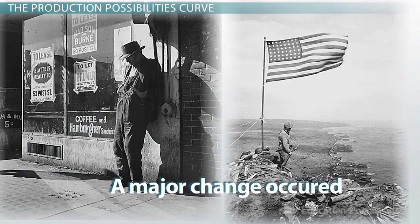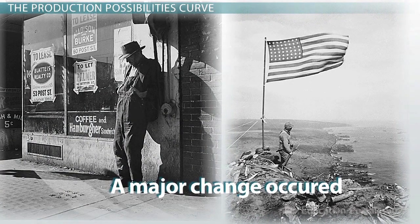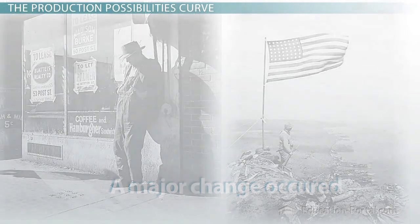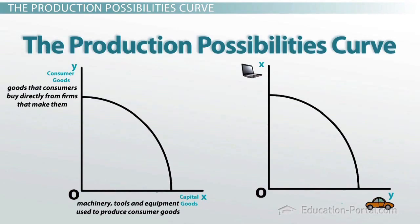Even though we were producing a lot more, we still had a limit — a capacity that we couldn't exceed unless something major changed. That's why any point outside the curve is not possible. The production possibilities curve, whether it's showing two specific goods such as cars and computers, or two types of goods such as capital goods and consumer goods, shows us how much is produced, which means it's showing us a picture of output.